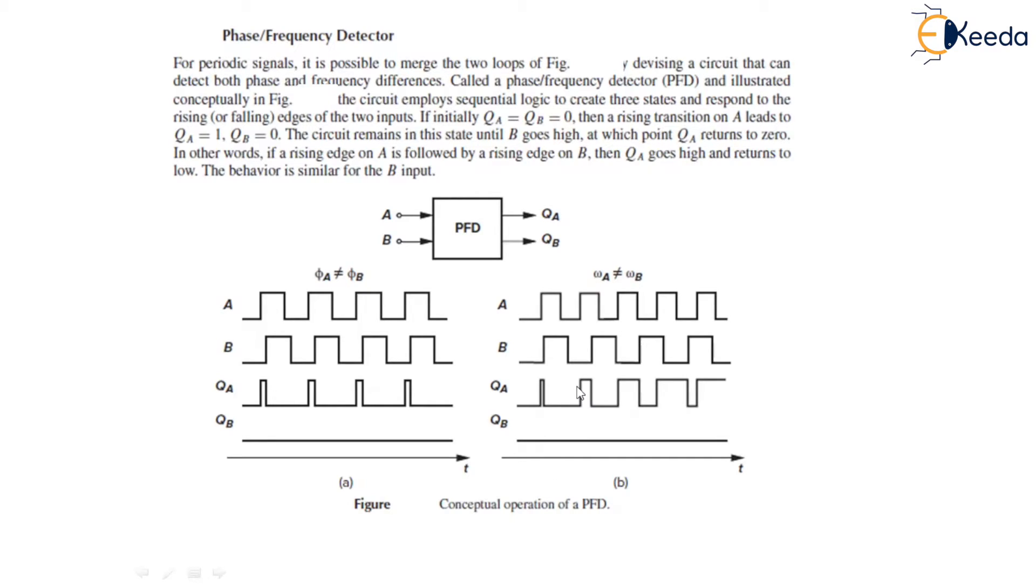And as shown in this figure B, A has a higher frequency than B. QA generates pulses while QB does not. And by symmetry, if A lags B or has a lower frequency, then QB produces pulses and QA remains quiet. Thus, the DC content of QA and QB provide information about phi A and phi B, or about omega A minus omega B. The outputs QA and QB are up and down pulses respectively. This is the conceptual operation of a phase frequency detector. Whichever input has a higher frequency, its corresponding output will produce pulse and the other will remain quiet.